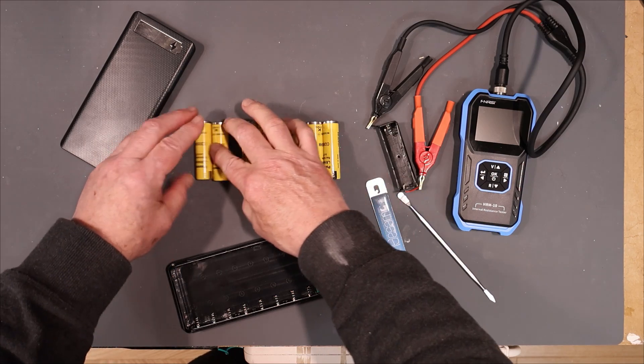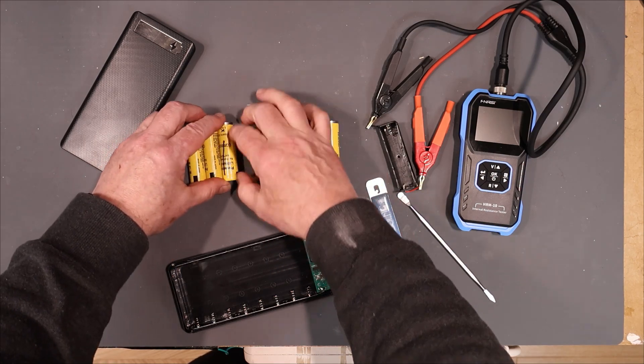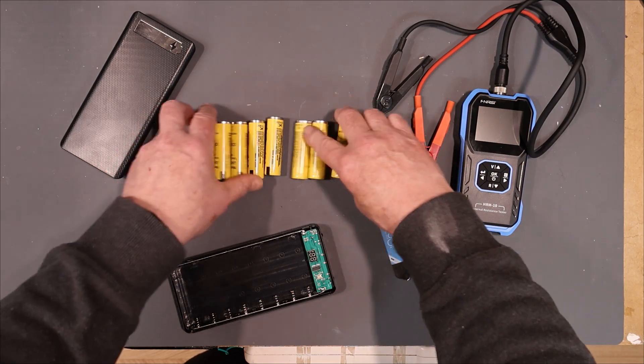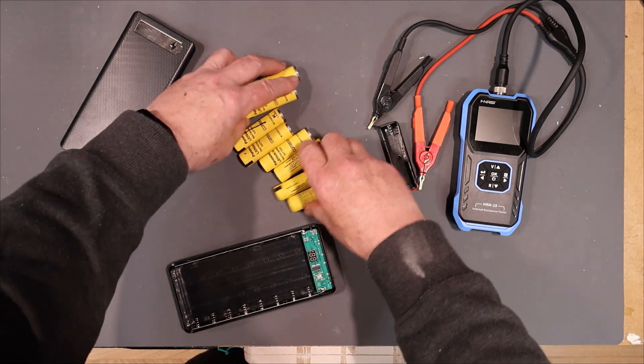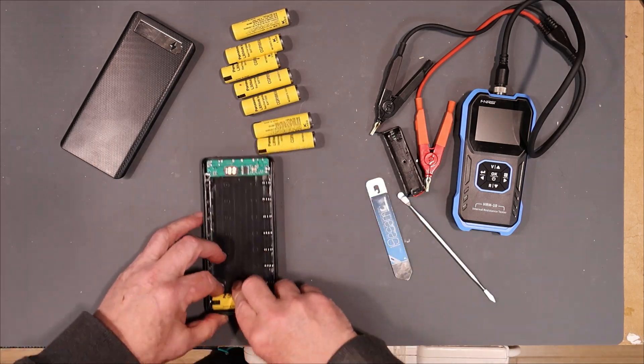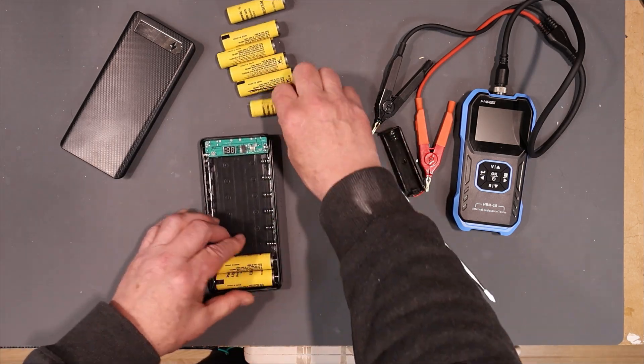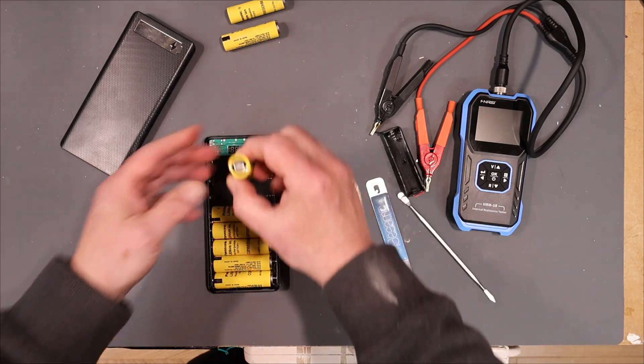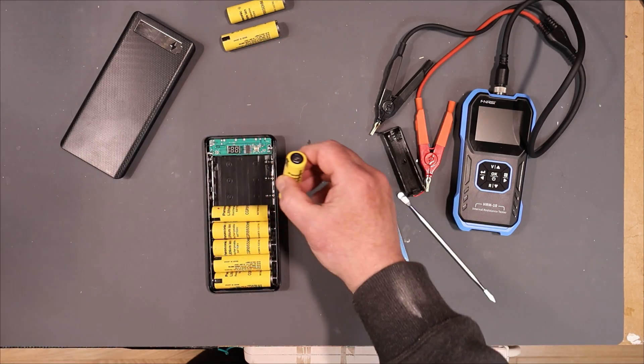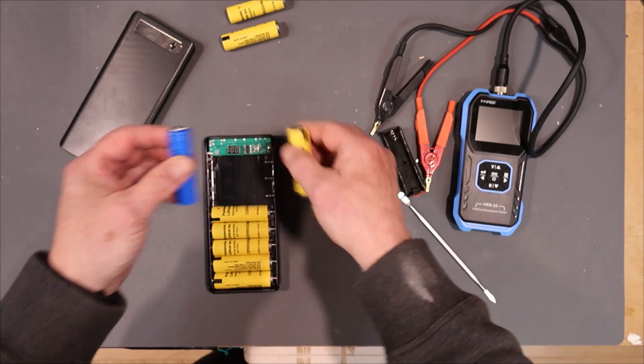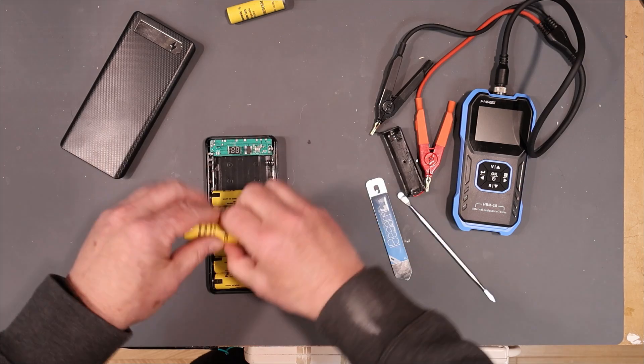Now, in loading these cells in, it is critically important to get them all in the right way around. Getting one in backwards will result in rapid grief. So, I'm going to make sure they all lay down in the same way. You also want to make sure that the cells you have have the flat positive terminal. Not like this one here that has the little pip on it. Otherwise, they're not going to fit. Okay, let's get loading.